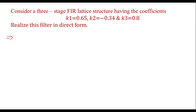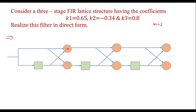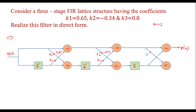First, let me draw the lattice structure for m equal to 3, as we have three coefficients. The lattice structure looks like this. These are the adders. Here we have input x(n) and output y(n). This is a delay element. These are the lattice coefficients: k1 with value 0.65, k2 with value minus 0.34, and k3 with value 0.8. This is the lattice structure for the given coefficients.